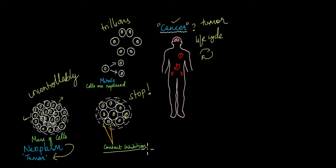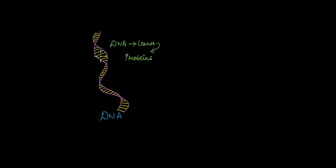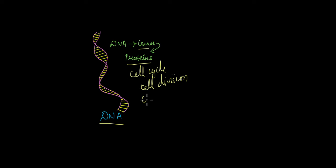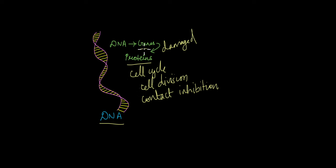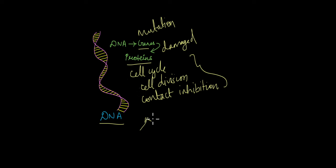But what causes the cells to lose contact inhibition and to divide uncontrollably? The answer lies within the genes. All cells in our body have DNA, and within the DNA are specific regions known as genes that code for specific proteins. Many of these proteins are involved in regulating the cell cycle, cell division, and contact inhibition. Sometimes the genes involved in these processes are damaged — a DNA or gene damage is known as a mutation. When these genes end up mutated, the proteins formed are not effective enough in controlling these processes, and those defective proteins cause the entire system to collapse, which is what leads to the development of cancer.